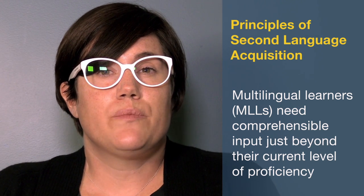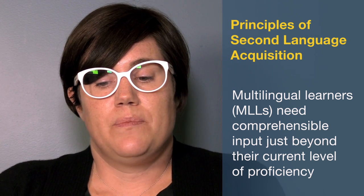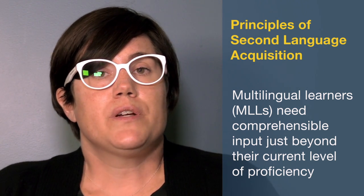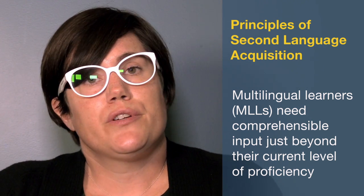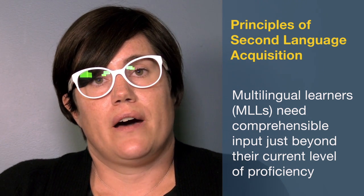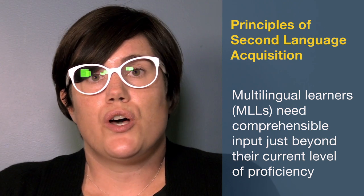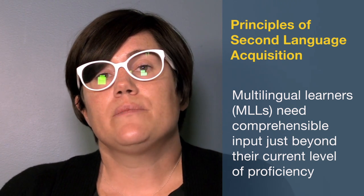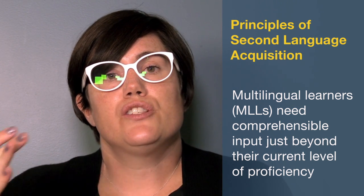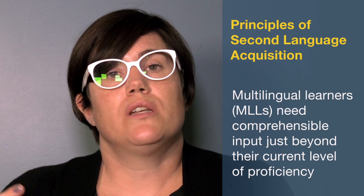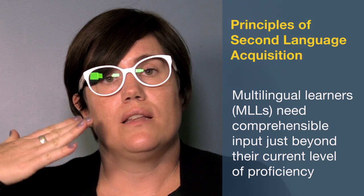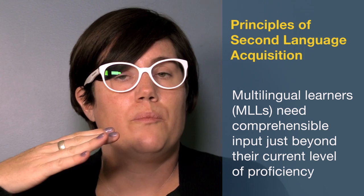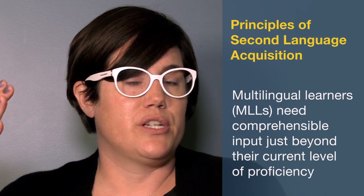The second principle is that multilingual learners need comprehensible input that is just beyond their current level of proficiency. This principle is very similar to what we've learned from Vygotskyan theory about the zone of proximal development — students are most going to benefit when they are given language at a level that is accessible but also challenges them.